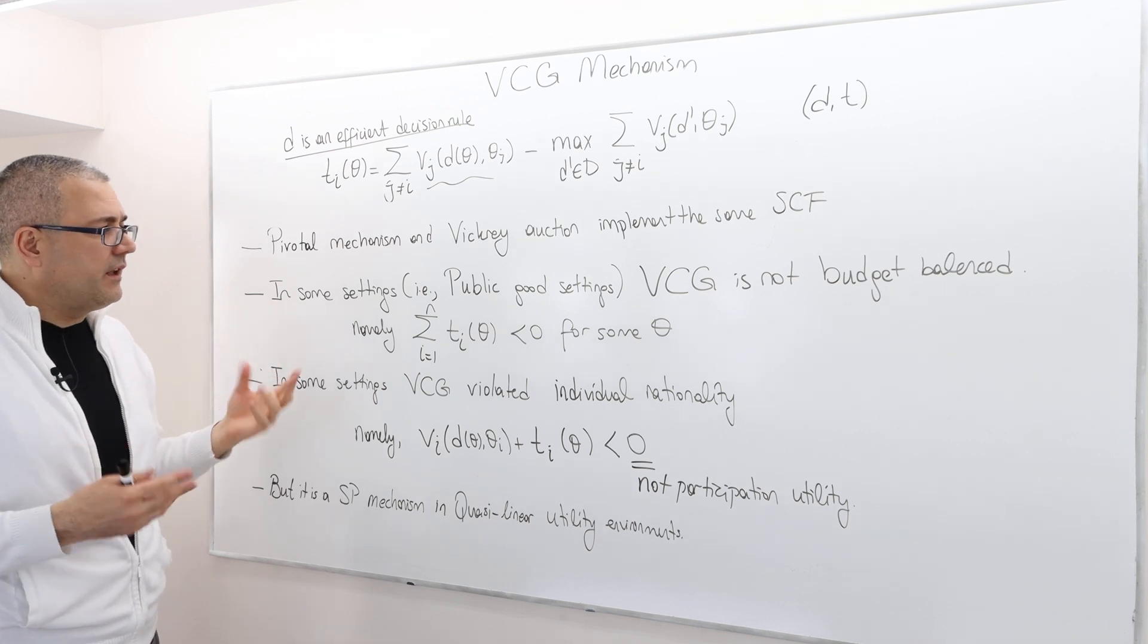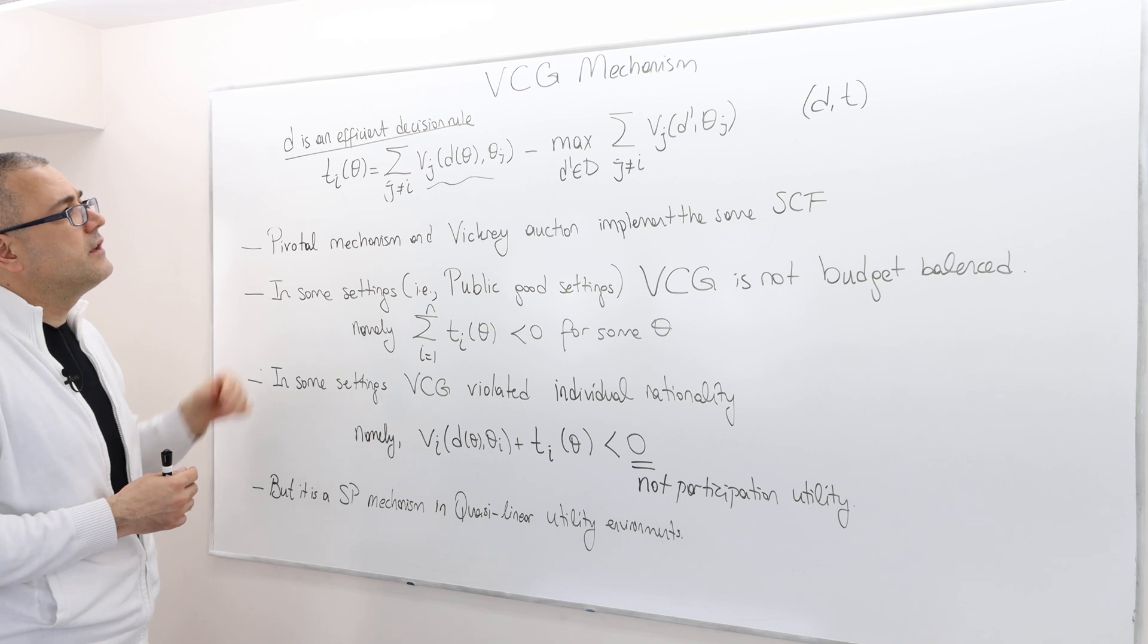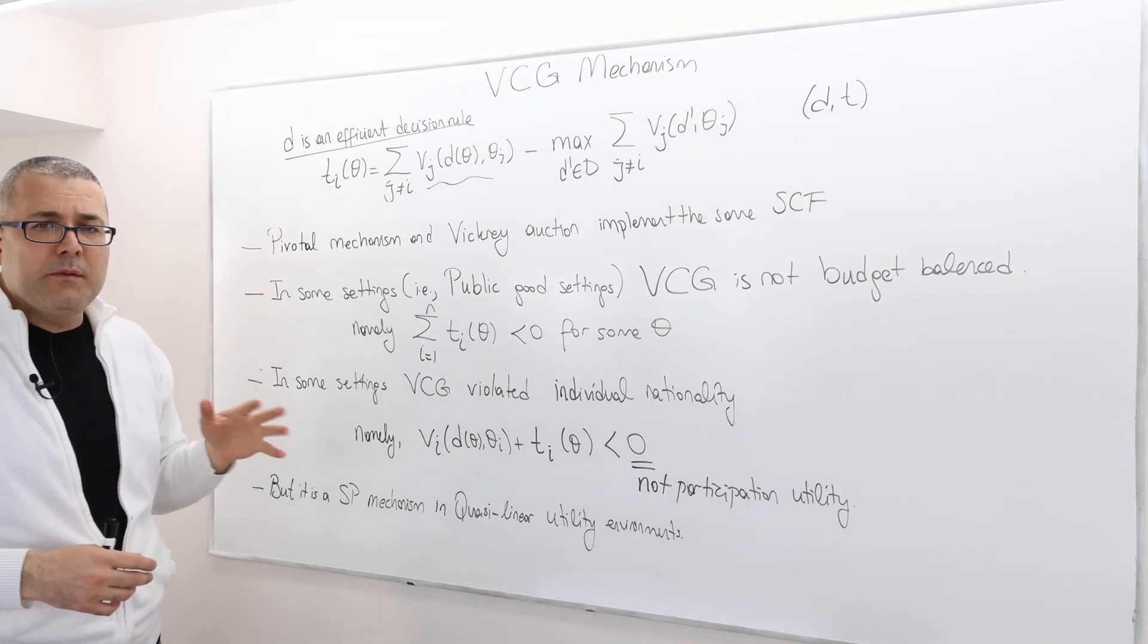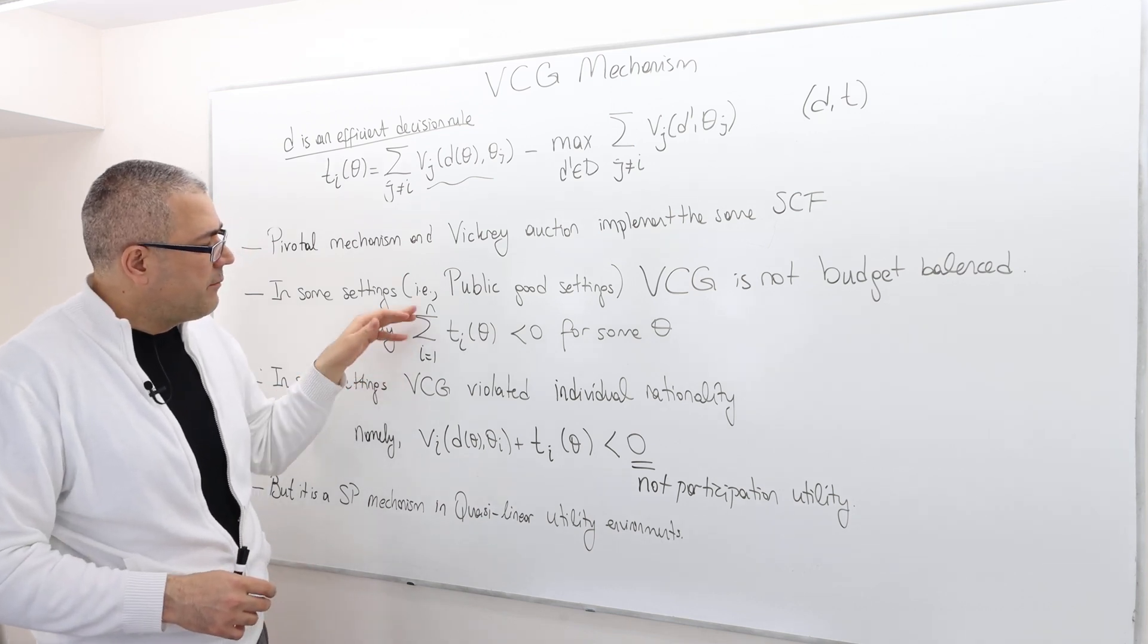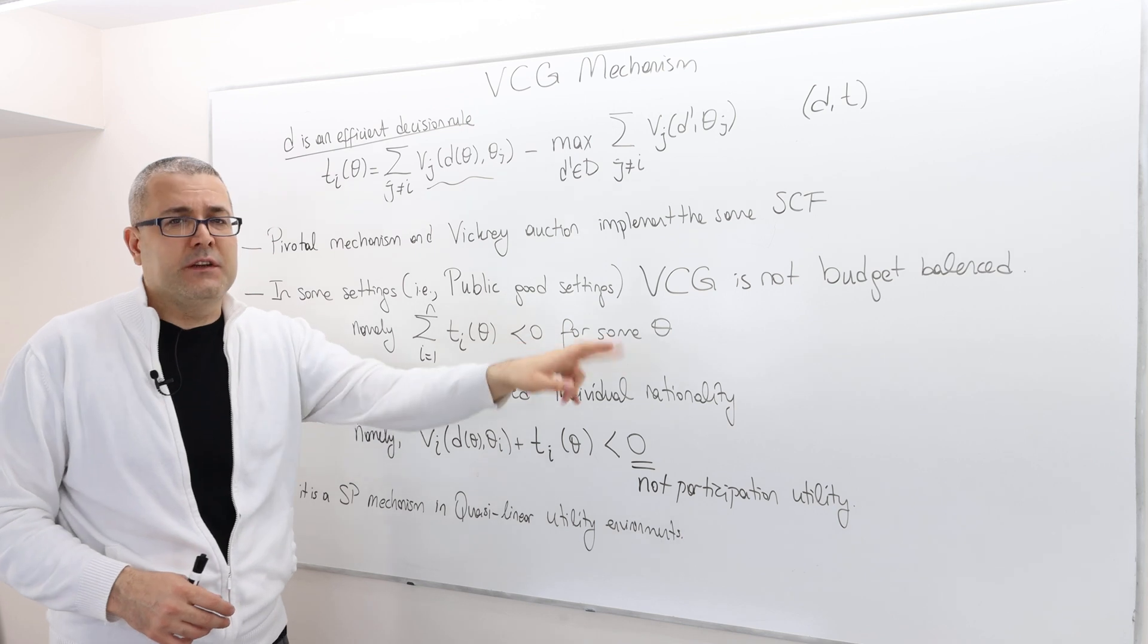Well in some settings, for example the public goods settings, the VCG mechanism is not budget balanced. Well if you remember the budget balancedness, it was the summation of the transfers must be equal to zero for every theta.